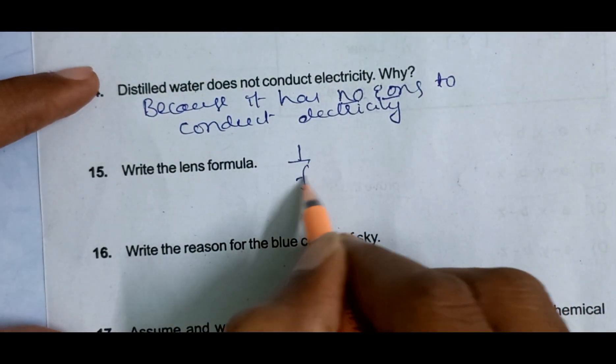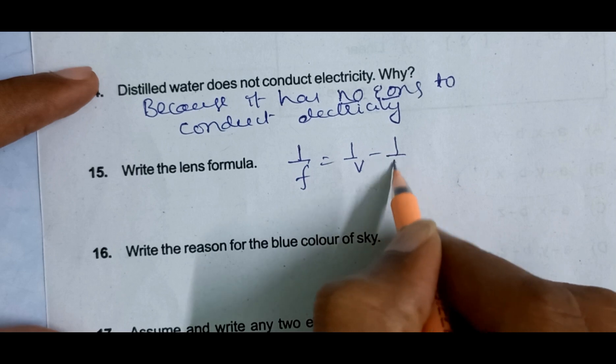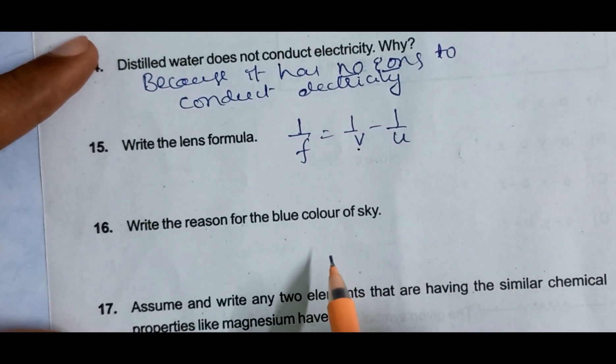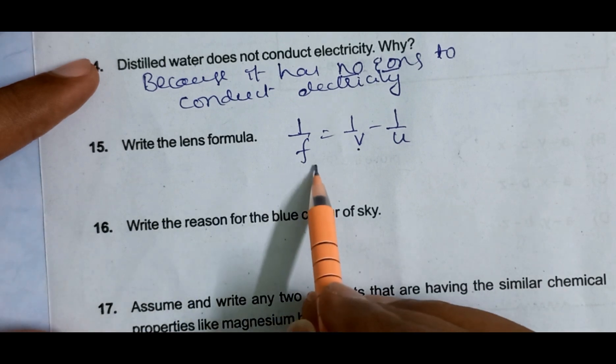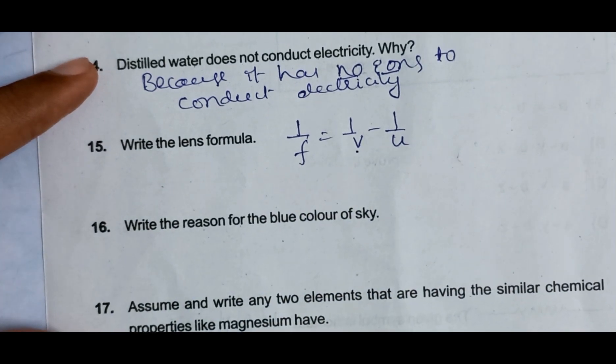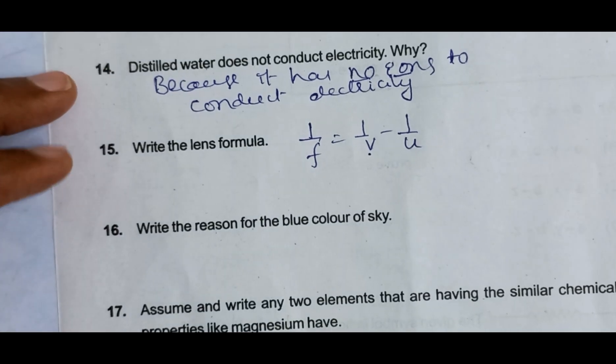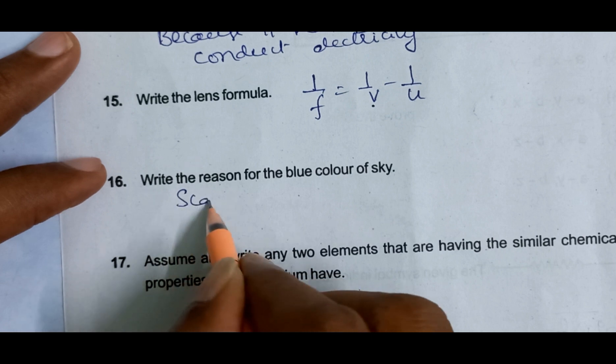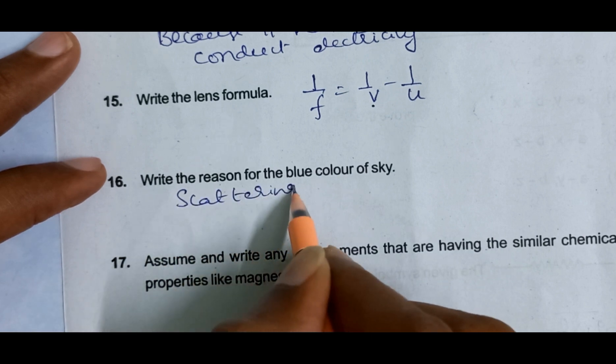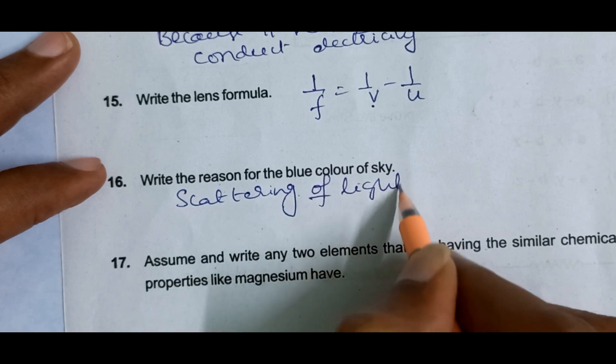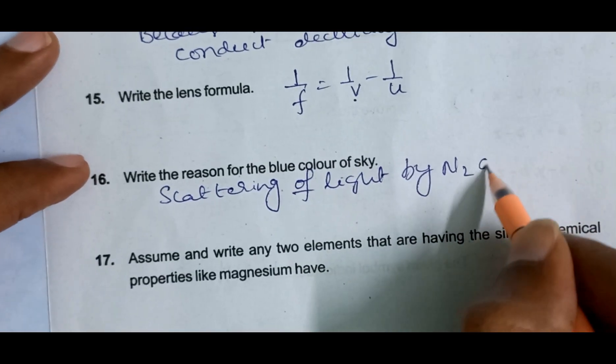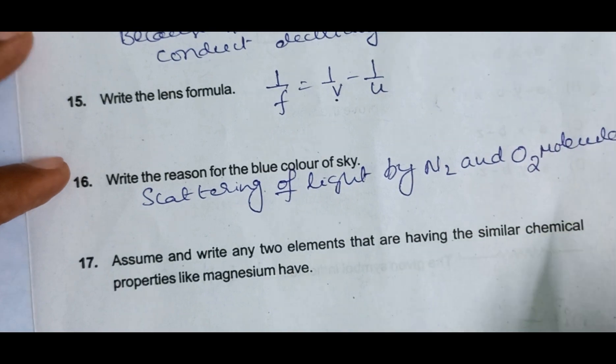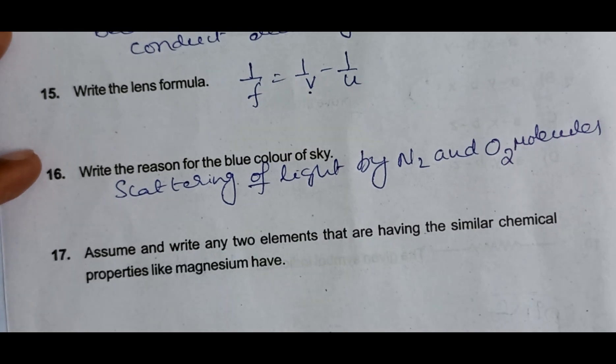Next, write the lens formula: 1/f = 1/v - 1/u. f is focal length, v is image distance, u is object distance. Next, write the reason for the blue color of the sky: scattering of light by N2 and O2, nitrogen and oxygen molecules.